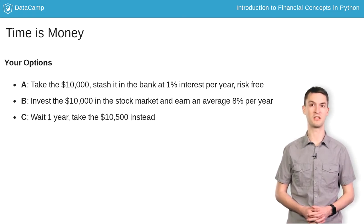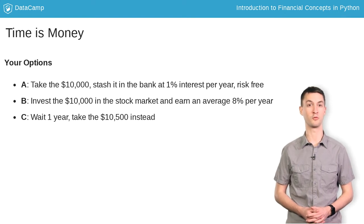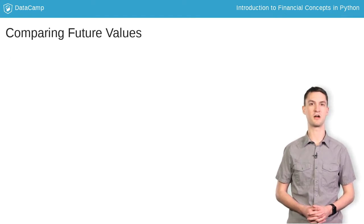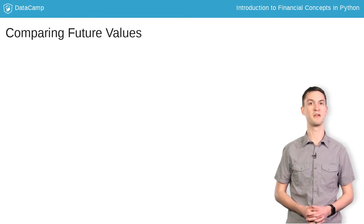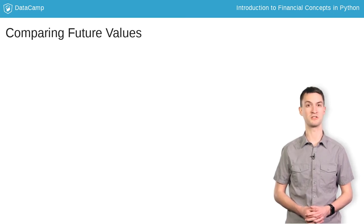Or finally, you could simply take the $10,500 if you wait for one year. What you've done by examining these options is computed the future value of each scenario. This then allows you to compare the scenarios since they are all denominated in the same time-based currency, which we'll call future dollars in this example.